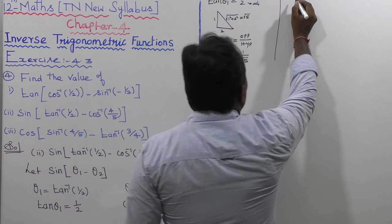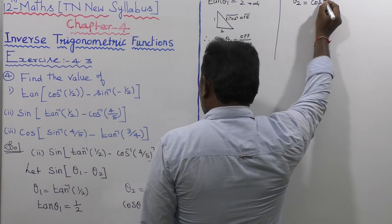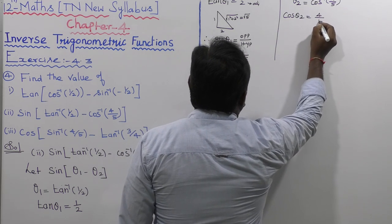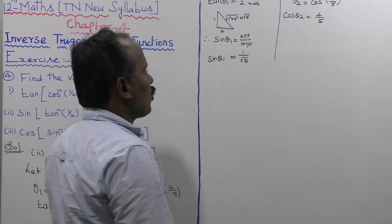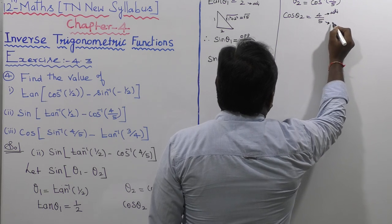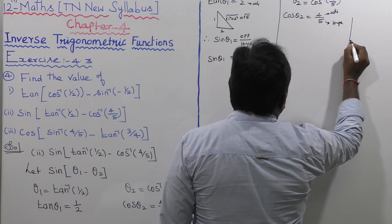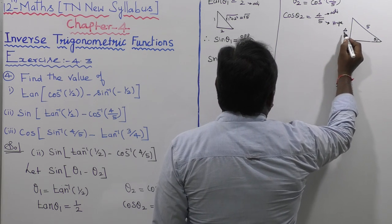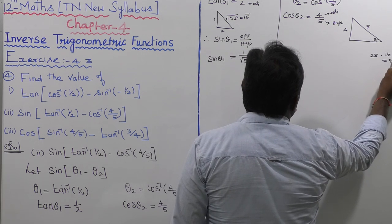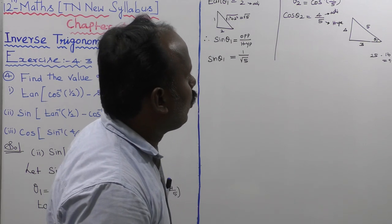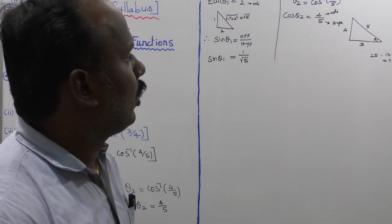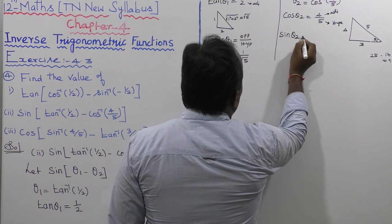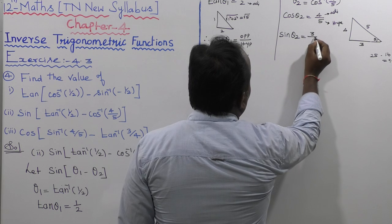Next, theta 2 is equal to cos inverse of 4 by 5. cos theta 2 is equal to 4 by 5, which is adjacent side divided by hypotenuse. In the right triangle, adjacent side is 4 and hypotenuse is 5. So the opposite side is root of 25 minus 16, which equals root of 9, which equals 3. That is the Pythagorean theorem. Therefore sin theta 2 is equal to 3 by 5.